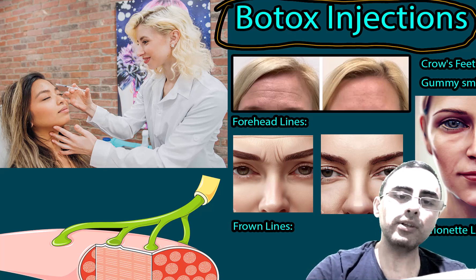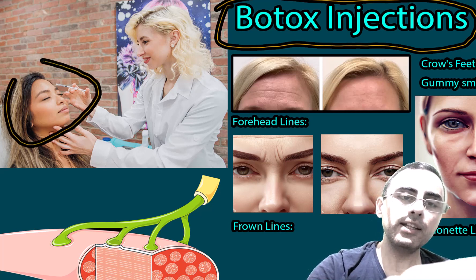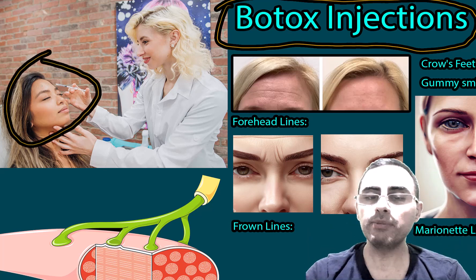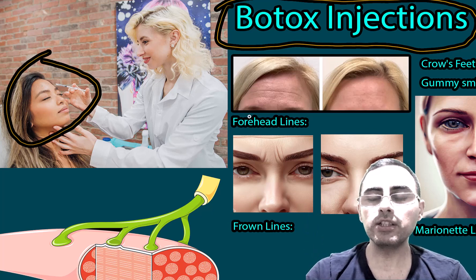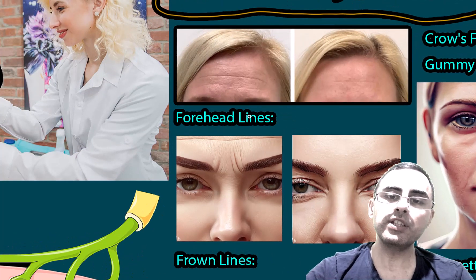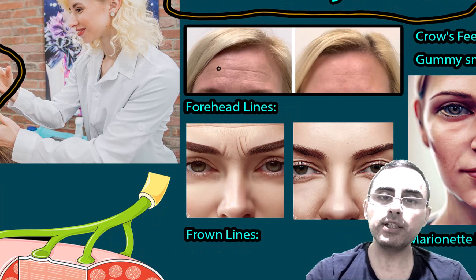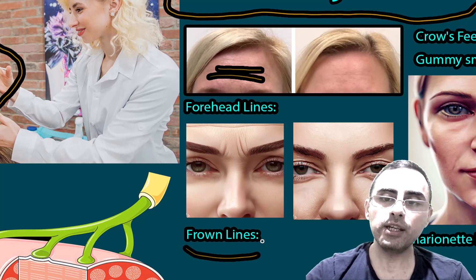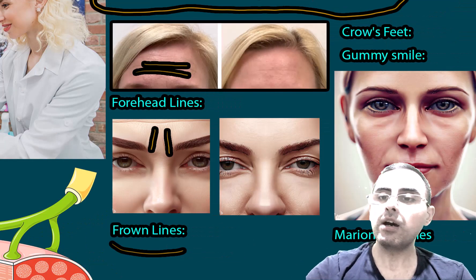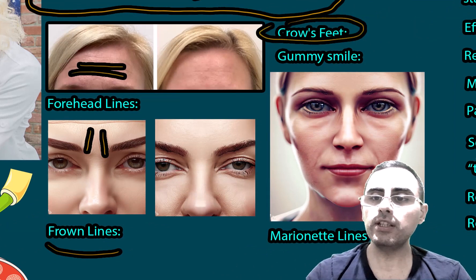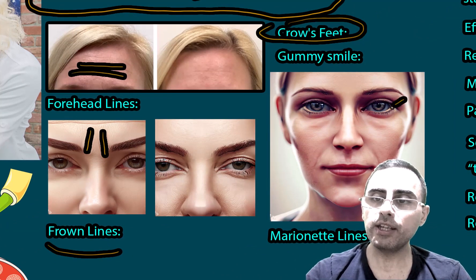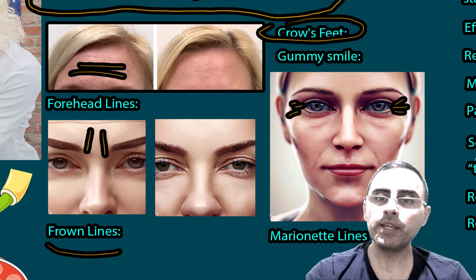Botox injections are mainly used for cosmetic purposes, especially for reduction of wrinkles. For example, it reduces wrinkles on the forehead very well, also frown lines which are the vertical lines between the eyebrows.